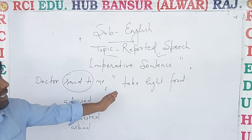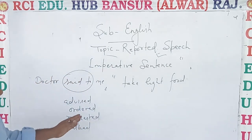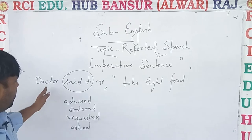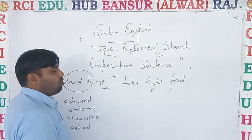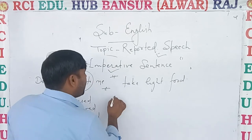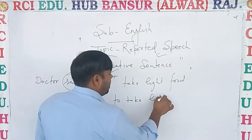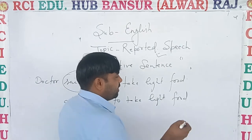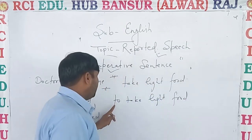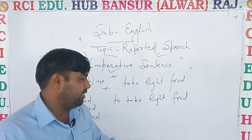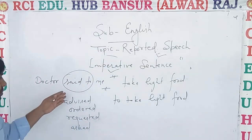If someone says 'please help me', then 'please' and 'kindly' indicate a request, so it will be 'requested'. Now, 'Doctor said to me' changes to 'Doctor advised me'. To remove the comma, we use 'to'. So: 'Doctor advised me to take light food.' If a pronoun is given, it will be changed according to the subject and object.